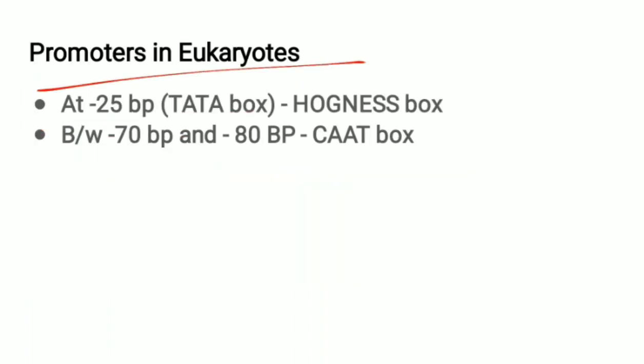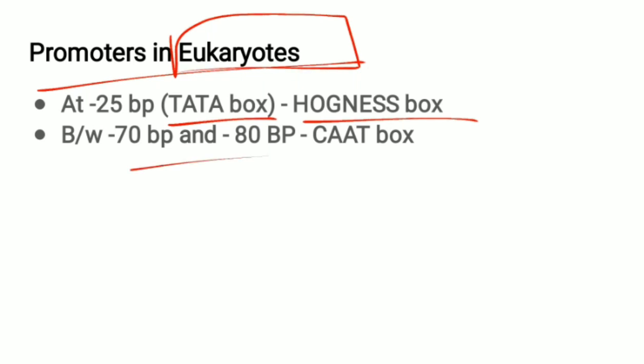There are two promoters identified in eukaryotes. One is present at 25 base pairs upstream, known as the TATA box or Goldberg-Hogness box. The other is present between 70 and 80 base pairs upstream and is known as the CAT box.